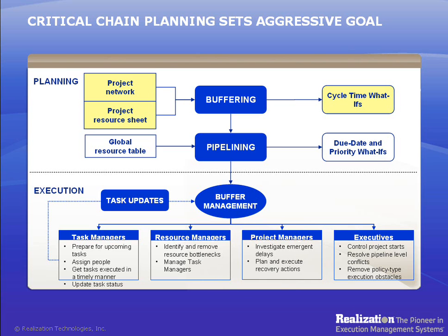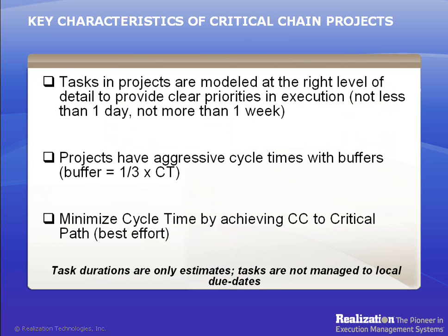There are three key characteristics to a critical chain project. First, tasks in a project should be modeled with the right level of detail to provide clear priorities. Here are some guidelines: limit the number of tasks to 300 tasks per project; the task duration should be no less than one day and no more than one week; tasks represent groups of work. A task should not be broken into several tasks just because it requires different resources for different durations of time. However, it should be broken for specific key resource types, in which case a separate task should be defined with that resource assigned over most of the task duration.